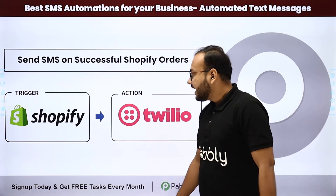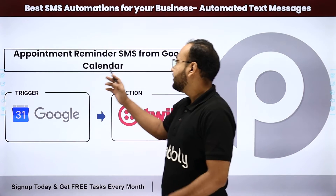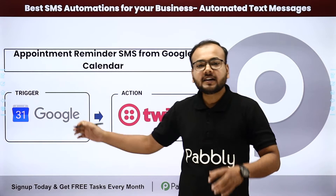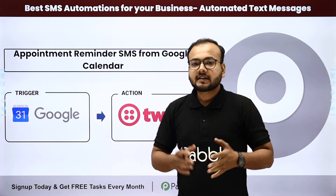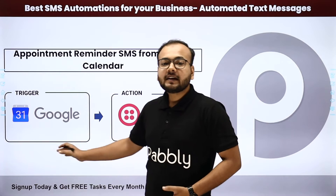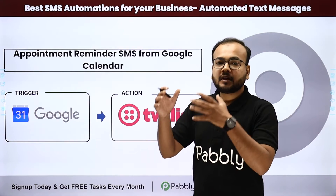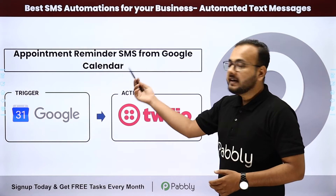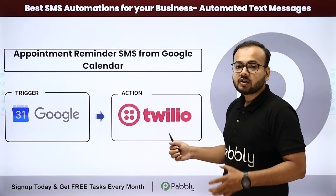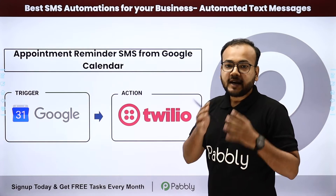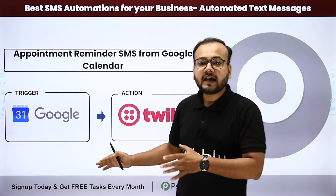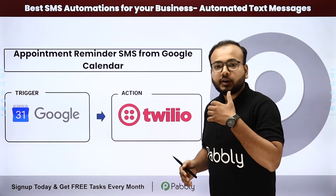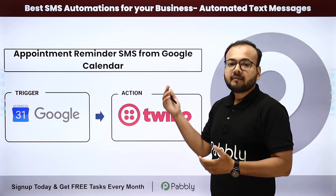The next automation is appointment reminder SMS from Google Calendar. If you are using Google Calendar for tracking your upcoming events or tasks, you can connect Google Calendar as the trigger application. Whenever you have any upcoming special or important event, you will receive an automated reminder SMS via Twilio on your mobile phone automatically. This is very useful — it will help you in tracking and monitoring your upcoming events and receive appointment reminders automatically.